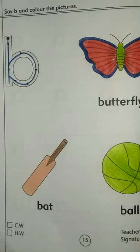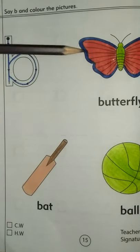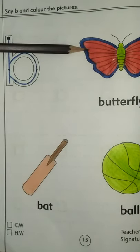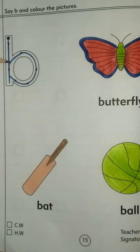Now again repeat after me. B is for butterfly. Wow! It is beautiful. B is for butterfly. Again repeat after me. B is for butterfly.